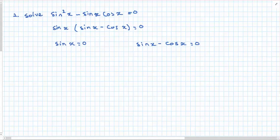So sin x equaling 0, well I know the solution to that. Sine is 0 at 0 and again at π, and of course it's 0 at 2π as well. Now in this case, I can rearrange sin x equals cos x.